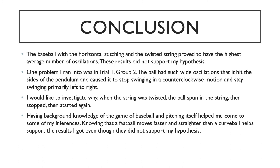One problem I ran into was with group two during the first trial — the ball had such wide oscillations that it was hitting the sides of the pendulum and stopped swinging in a counterclockwise motion, staying primarily in a straight line going left to right. One thing I would like to investigate further is why, when I twisted the string and the ball was spinning, did the ball stop spinning and then start spinning again. Also, having background knowledge of the game of baseball and pitching helped me come to some of my conclusions, knowing that a fastball moves faster and more precise than a curveball, which supports the results that I got even though it did not support my hypothesis.